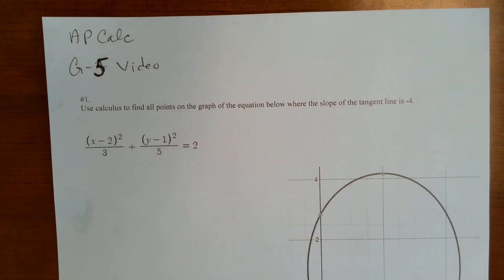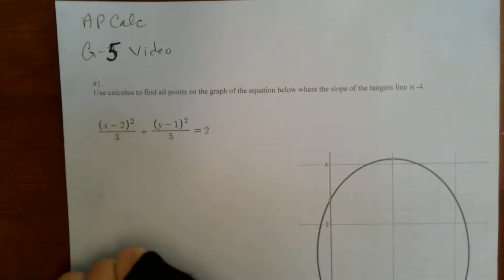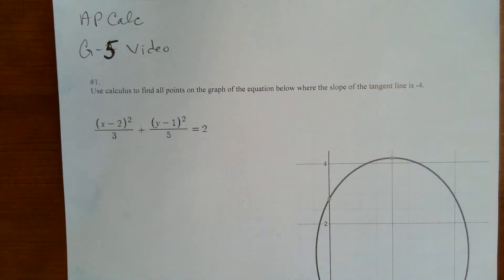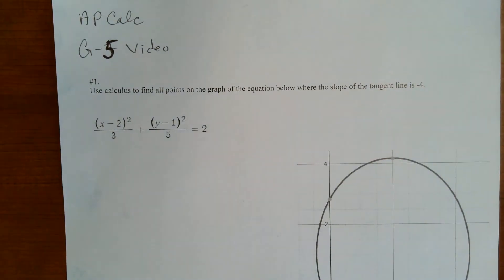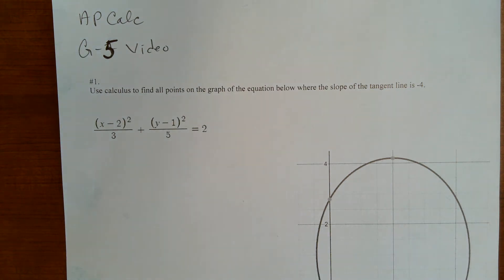Here is the G5 video. I'm just going to do one problem and then you're going to do three problems for the practice. So I'm doing number one from the practice: use calculus to find all points on the graph of the equation below where the slope of the tangent line is negative four.